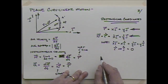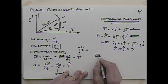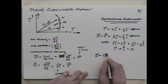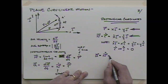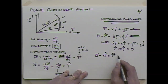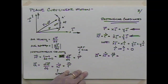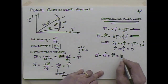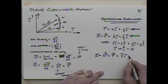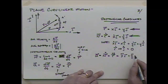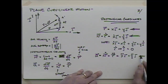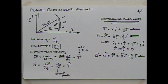Differentiating again, acceleration equals x-double-dot·i + y-double-dot·j, since i-dot and j-dot are both zero. Rectangular coordinates are probably the easiest to work with, although when dealing with curvilinear motion a different coordinate system is often more convenient. Done carefully, any coordinate system should give the same answer.